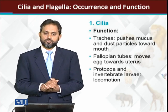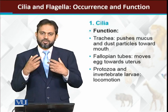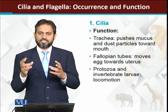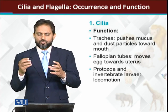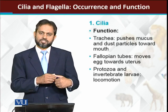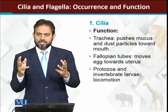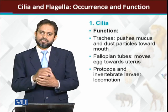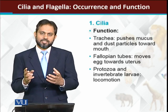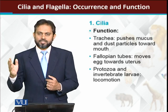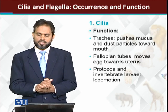In the fallopian tubes, our reproductive system is able to function because cilia can move the egg from the fallopian tubes toward the uterus. Basically, cilia in the fallopian tubes move the egg forward.